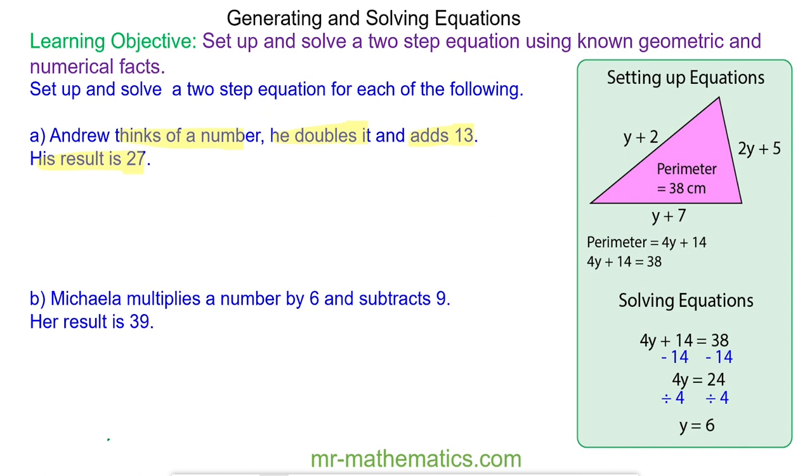When he thinks of a number, this number is unknown so we're going to call it x. He doubles it which means 2x, which is 2 times x, and then he adds 13 so 2x add 13. His result is equal to 27.